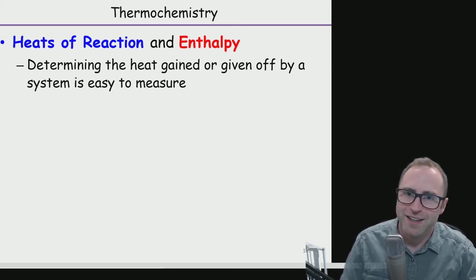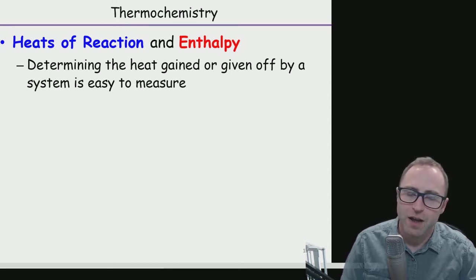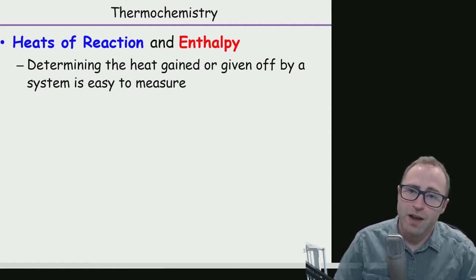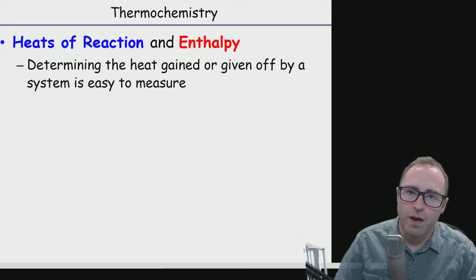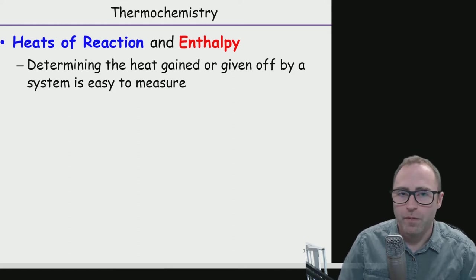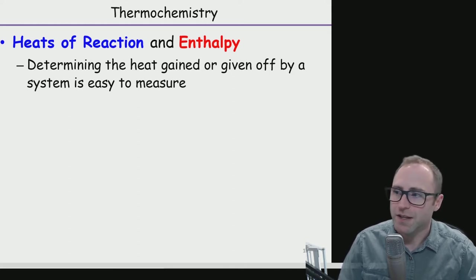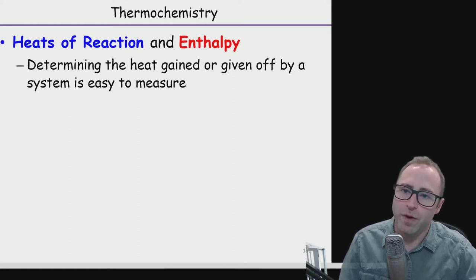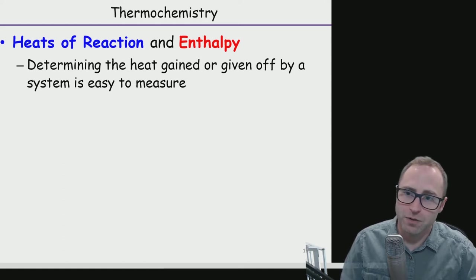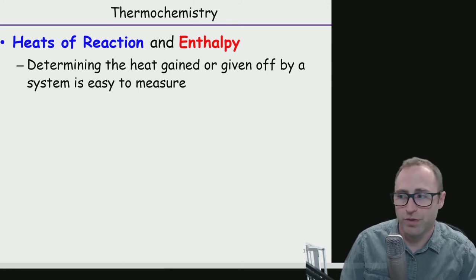A lot of times we're measuring the change in heat for a chemical reaction. Sometimes it's a reaction like combustion; sometimes it's just a process like a solid dissolving. That dissolving isn't really a chemical reaction, but something like combustion is. Whether it is a dissolution or a combustion, measuring heat gained or lost is pretty simple — you just use a thermometer.